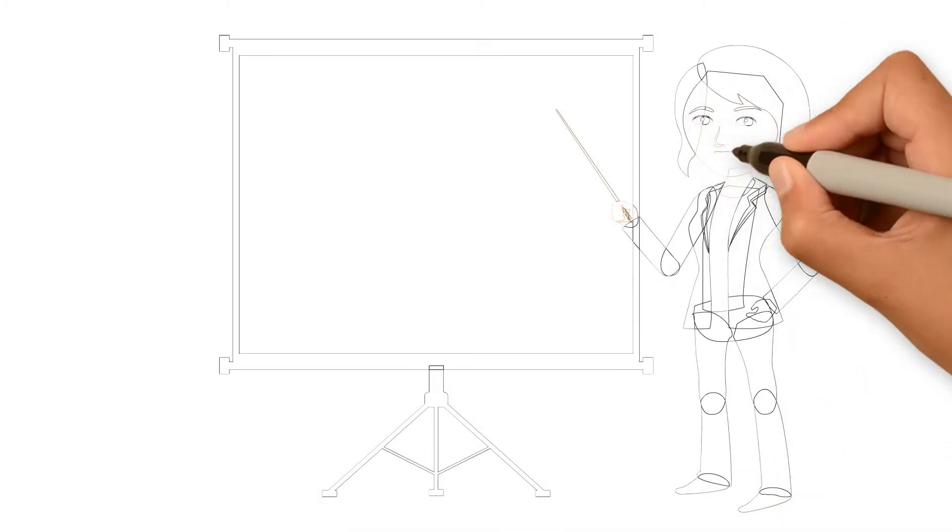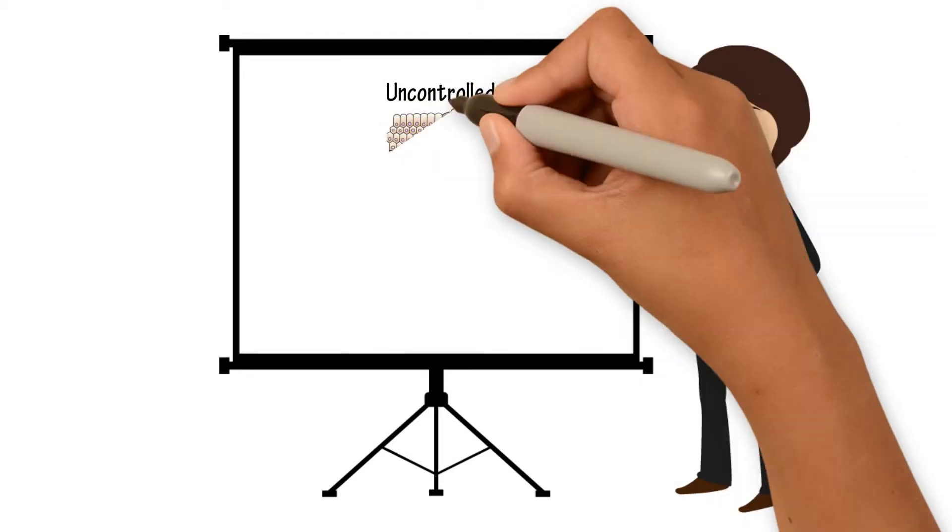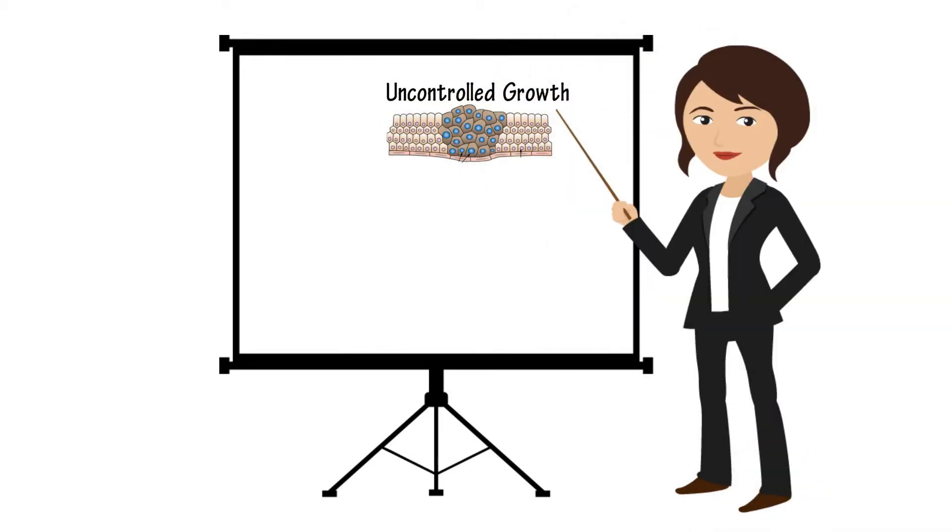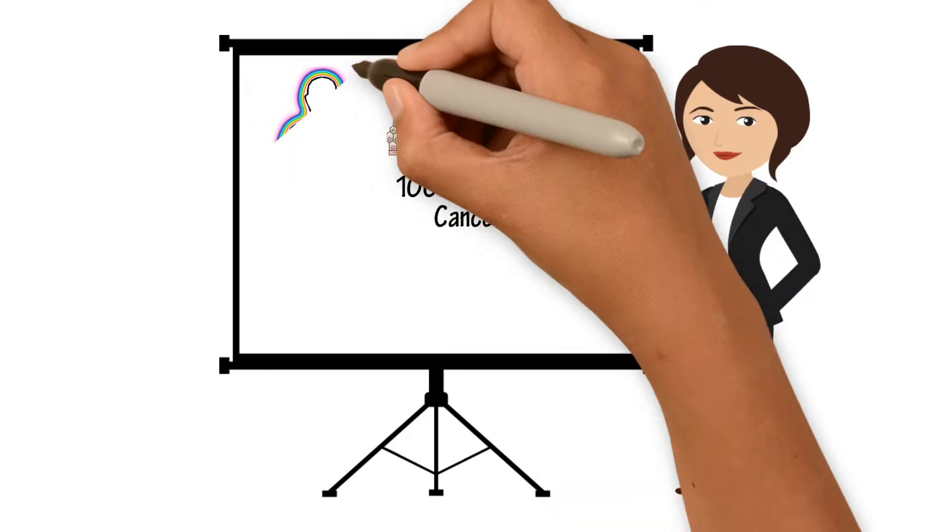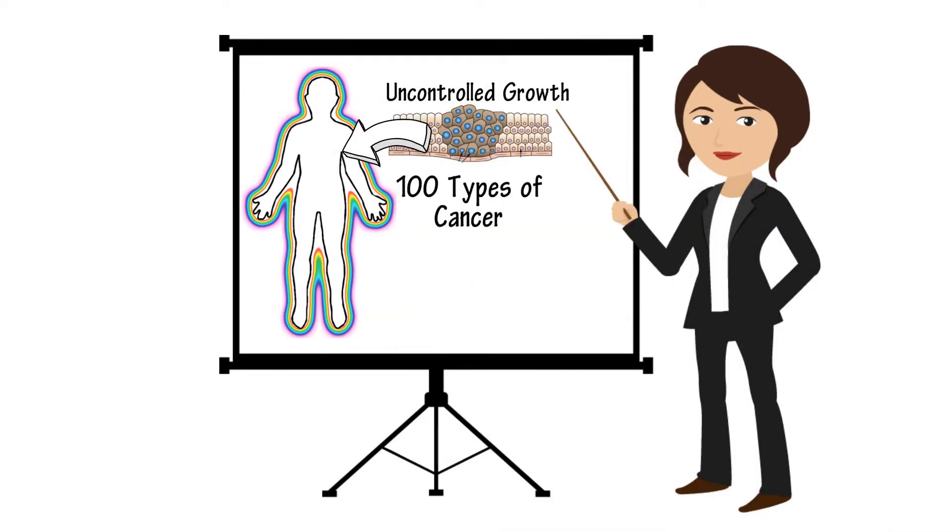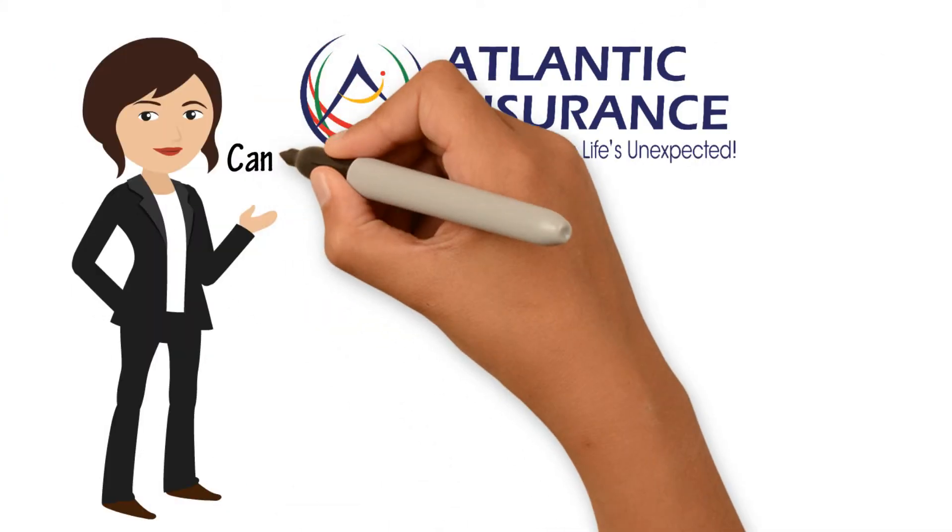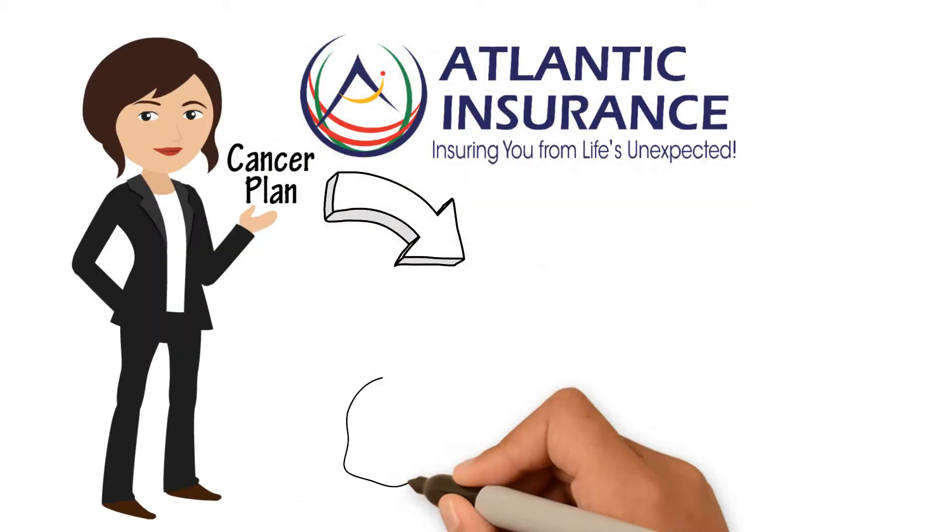Cancer plan. Cancer is characterized by uncontrolled growth and spread of abnormal cells. There are over a hundred types of cancer and any part of the body can be affected. At Atlantic Insurance, we offer a cancer plan with a sum insured ranging from $10,000 to $50,000.